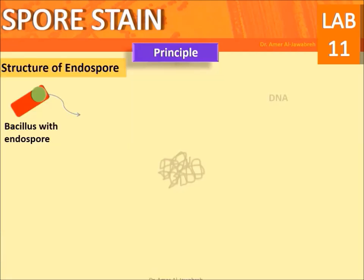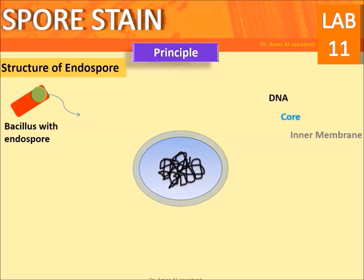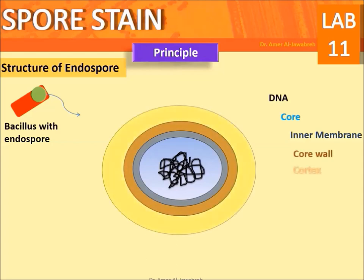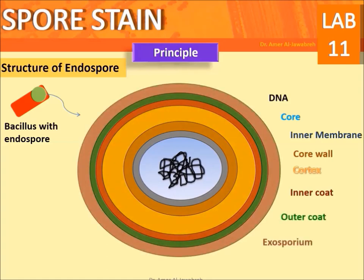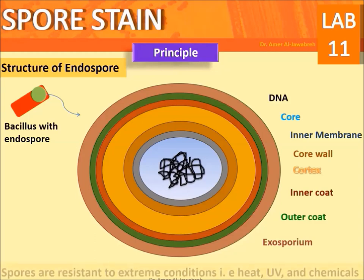The principal structure of an endospore consists of: DNA core, inner membrane, core wall, cortex, inner coat, outer coat, and exosporium. Spores are resistant to extreme conditions such as heat, UV radiation, and chemicals.